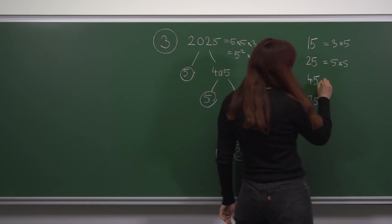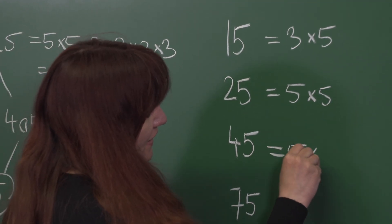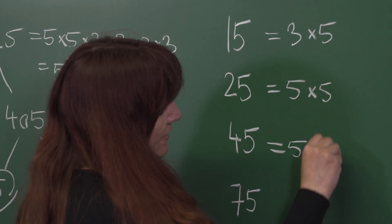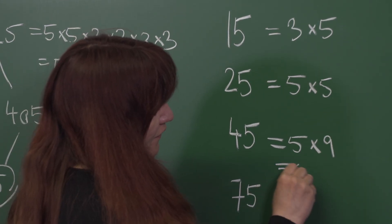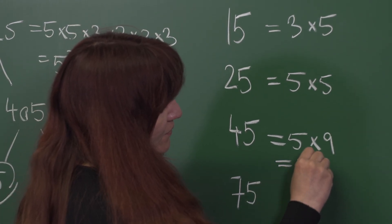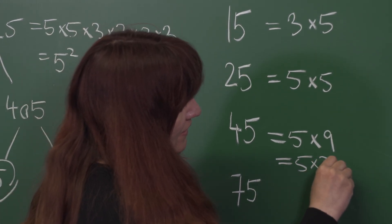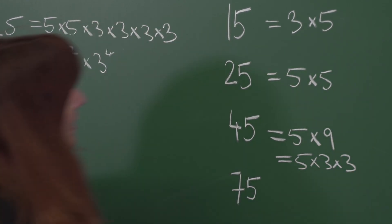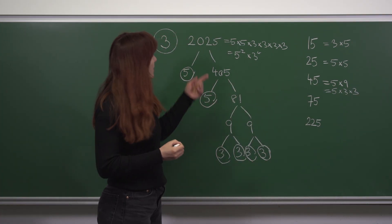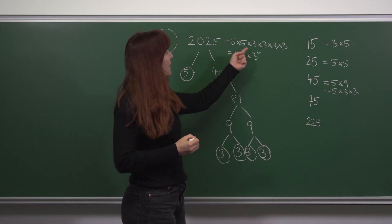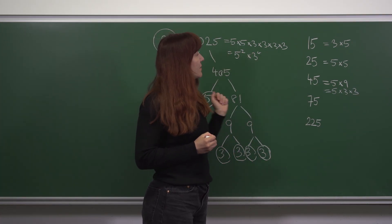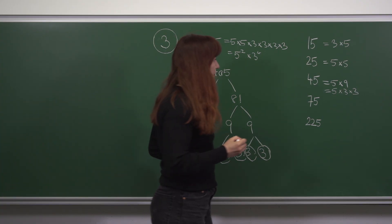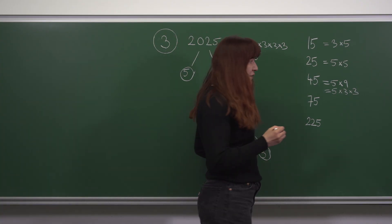45 is 5 times 9, which is 5 times 3 times 3. We can see it's a factor because 5 times 5 times 3 times 3 times 3 times 3 gives us 2025 again.